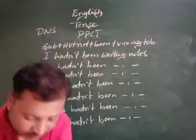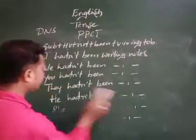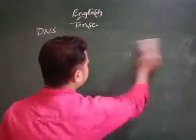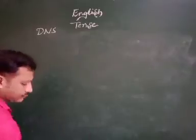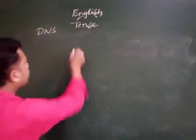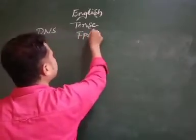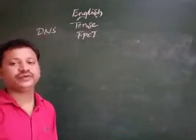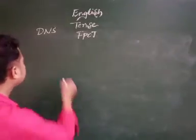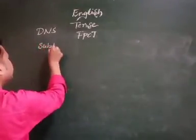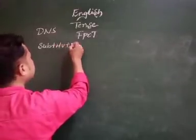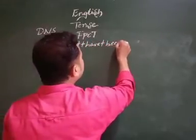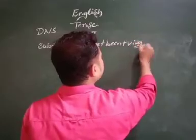The last one is Future Perfect Continuous Tense. The action won't have been going on. The structure is: Subject + helping word + not + have + being + verb in -ing form + object.